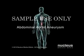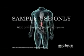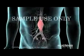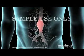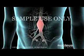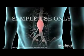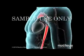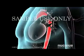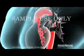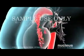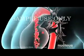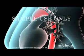Your surgeon will perform an abdominal aortic aneurysm repair to prevent the rupture of a bulging area of your aorta. The largest artery in the body is the aorta, which is attached to the heart and receives blood directly from the left ventricle, or main pumping chamber.